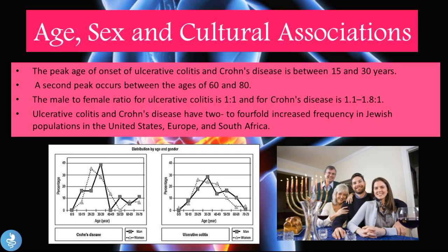The age, sex, and cultural associations of the disease: the peak incidence of onset for ulcerative colitis and Crohn's disease is between ages 15 and 30 years old. A second peak occurs between ages 60 and 80. The male-to-female ratio for ulcerative colitis is 1 to 1, and for Crohn's disease is 1.1 to 1.8 males for every one female.